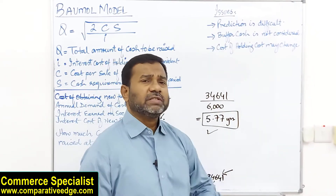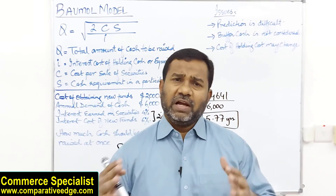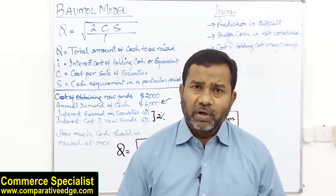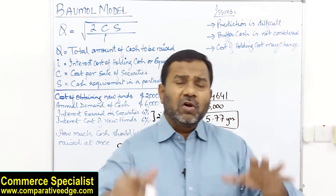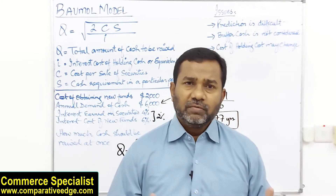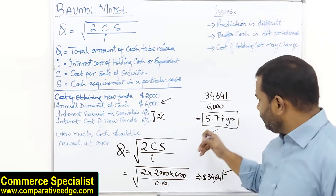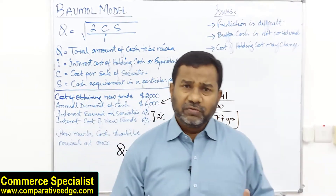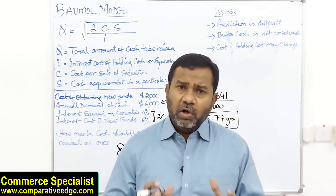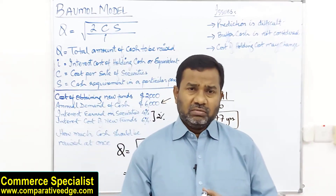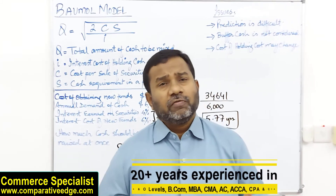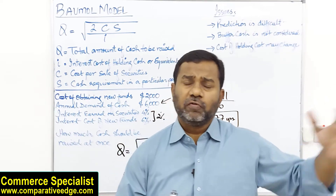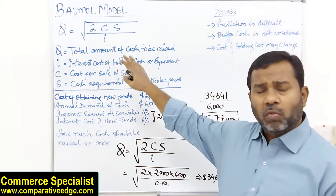The Baumol model has certain limitations, like any other model. First, prediction is difficult — estimating how much cash you'll need in a year is not straightforward, though you can use historic annual cash requirement figures. Second, the model does not consider a buffer amount of cash for emergencies; it only says to raise cash every 5.77 years, but what if the cash runs short in between? Third, the cost of holding funds may change — banks have fixed or floating interest rates — so the model assumes the cost of holding and obtaining funds remains constant.